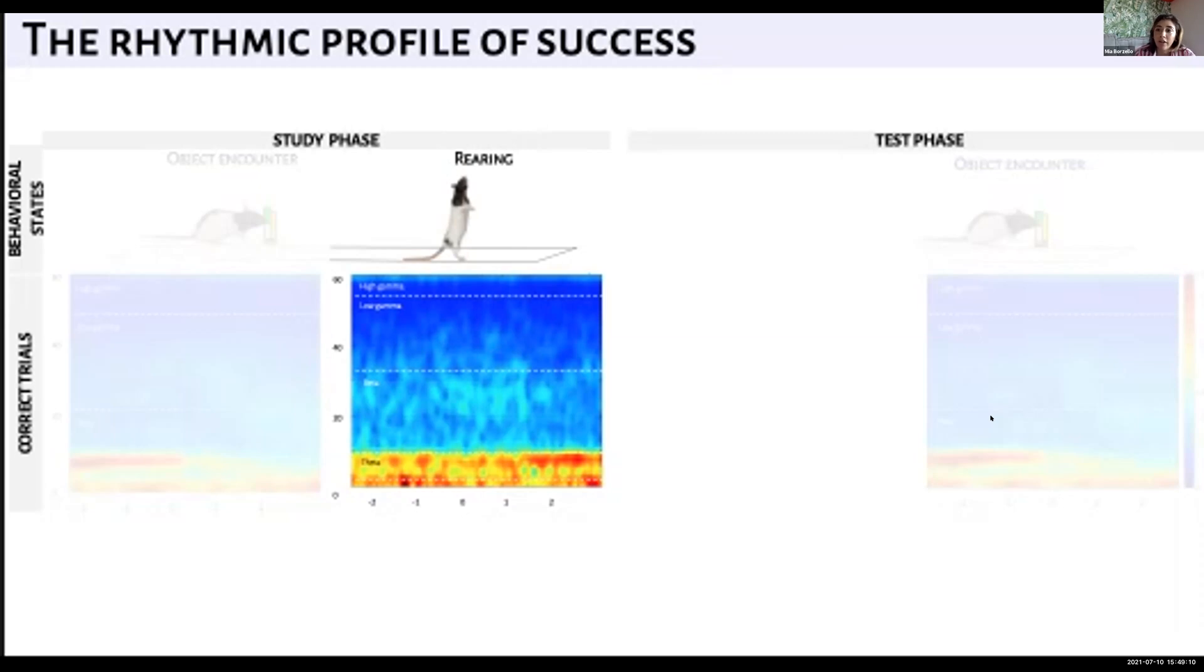The first behavior is rearing and this manifests as standing on the hind limbs and scanning the environment from an elevated perspective. That vantage point gives the rat added information that it wouldn't otherwise have. We found that for 58% of correct trials, the rats reared during the study phase. From the spectrogram, what we see is both greater theta and beta frequencies.